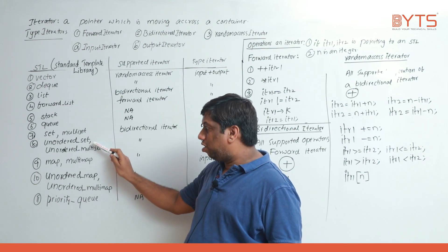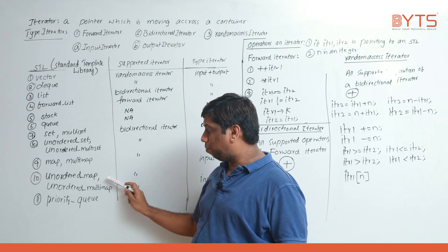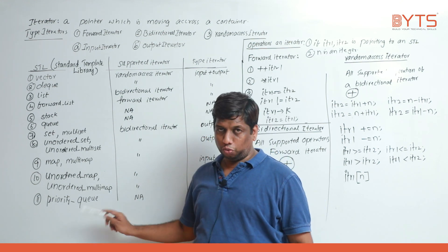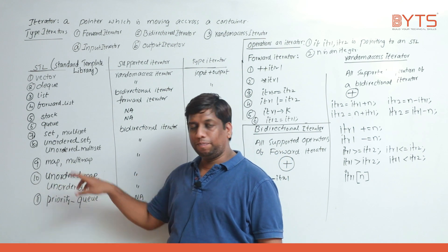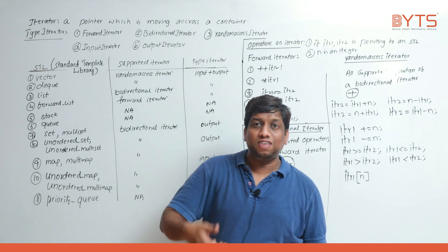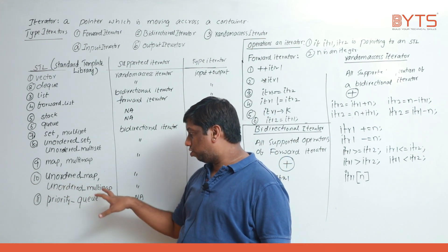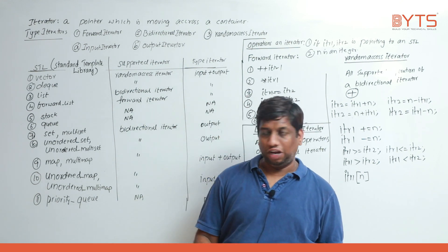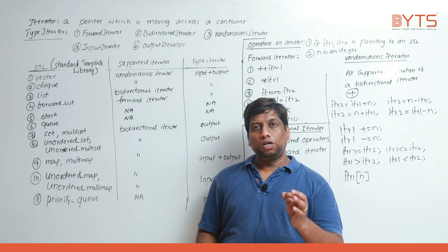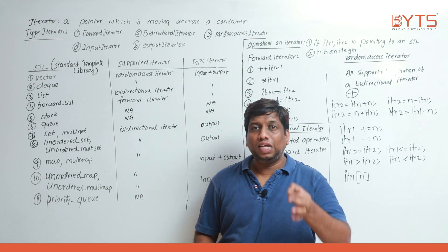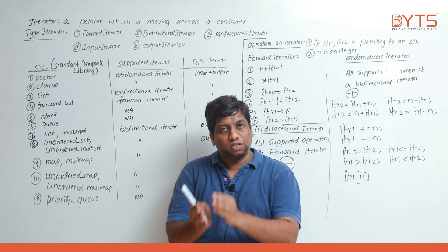The various STL containers are: vector, deque, list, forward list, stack, queue, set, multi-set, unordered set, unordered multi-set, map, multi-map, unordered map, unordered multi-map, and priority queue. Map and multi-map are in the same header file; similarly unordered map and unordered multi-map are in the same header file. Now we need to know which container supports which iterator.